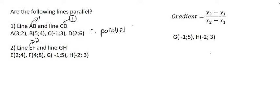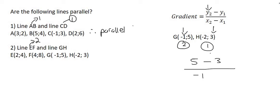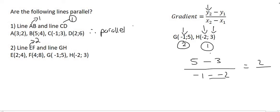Now we can work out the gradient of line GH. I'm going to call G point number 2 and H point number 1, and use the gradient formula. So the Y value of point number 2 is 5, minus the Y value of point number 1, which is 3, over the X value of point number 2, which is minus 1, minus the X value of point number 1, which is minus 2. At the top you end up with 2, and at the bottom, minus 1 plus 2 gives us 1. So the gradient of line GH is 2 divided by 1, which is 2. And so line GH and EF are also parallel, because their gradients are the same. When two lines have the same gradient, they are parallel.